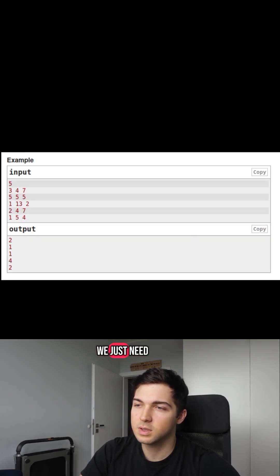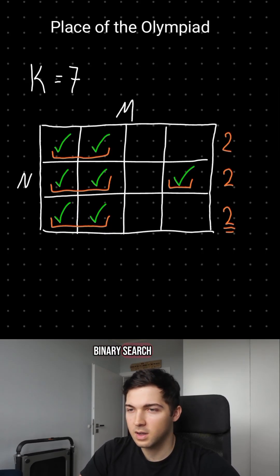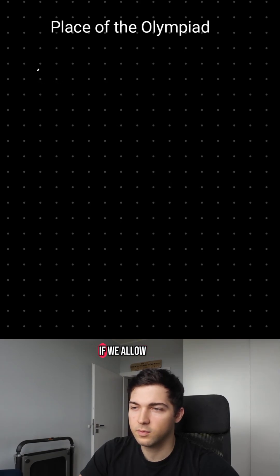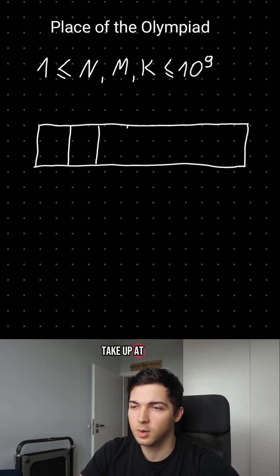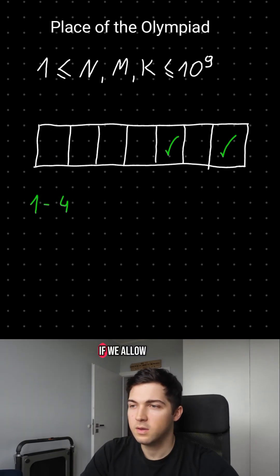Ok, so to solve it we just need basic math and binary search. Let's take a look at one row. If we allow only segments of length 1 then we can take up at most half the seats. If we allow for longer segments we can use up to all seats.